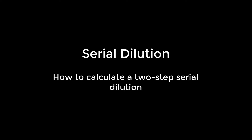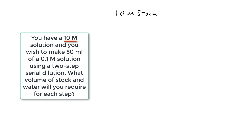In this video we're going to look at how to use a two-step serial dilution to dilute a stock solution to give us a working concentration. So let's say you have a 10 molar solution and you wish to make 50 mils of a 0.1 molar solution. Now we need to do this using a two-step serial dilution, but what would happen if we try to do it in one step?